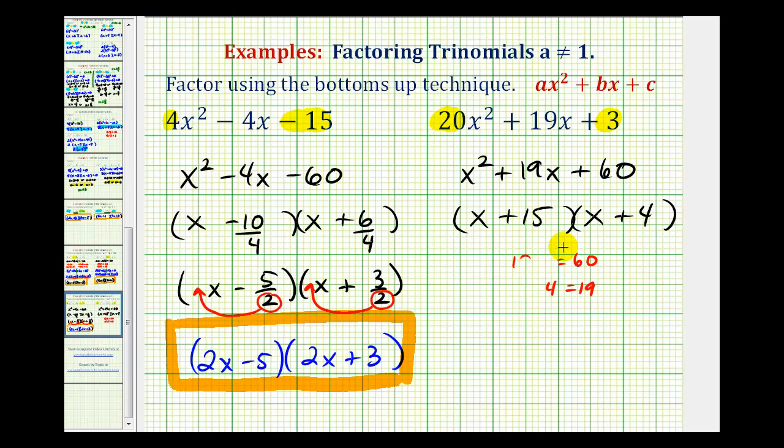And now we're going to divide each constant of the binomial factors by the original a, or in this case twenty. Next step is to simplify these fractions. And so we'll have x plus three fourths, and here we'd have x plus one fifth.